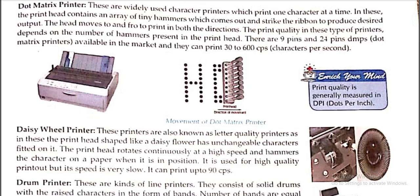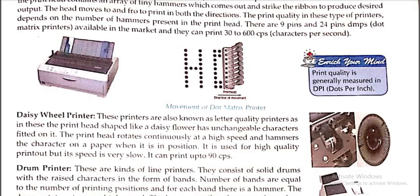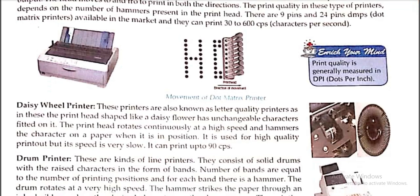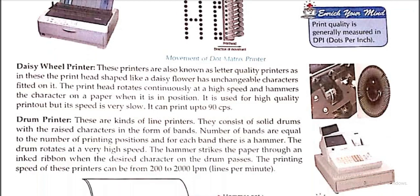Dot matrix printers are used at railway counters — when you buy a ticket, the railway employee prints your ticket using a dot matrix printer. This is because dot matrix printers have the feature to print an original as well as a carbon copy. Also, this type of printer is cheaper, so railways use them widely.